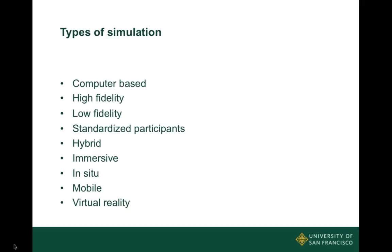Standardized participants or standardized patients, also known as SPs, are very high-fidelity — these are people hired or who volunteer to act like a real patient, scripted to let students ask them questions and examine them. They can also act as family members or other roles. A hybrid simulation entails a combination of perhaps a high-fidelity mannequin or task trainer and a standardized participant — for example, an OB simulation where an actor portrays a laboring patient while the birth is completed with a birthing task trainer.